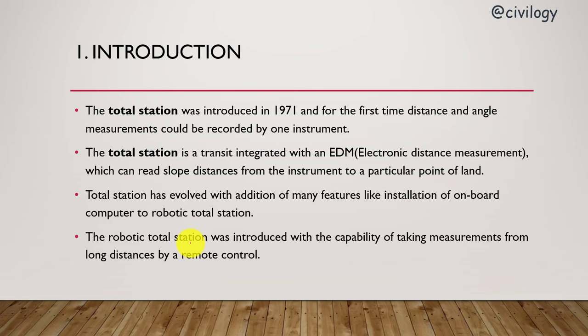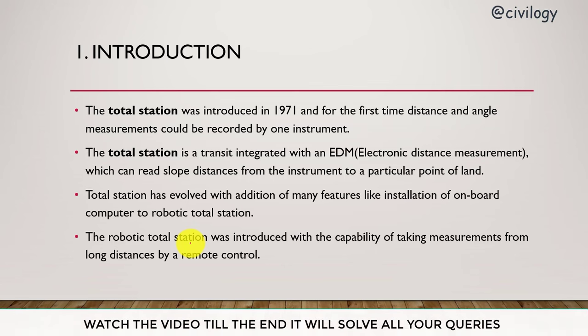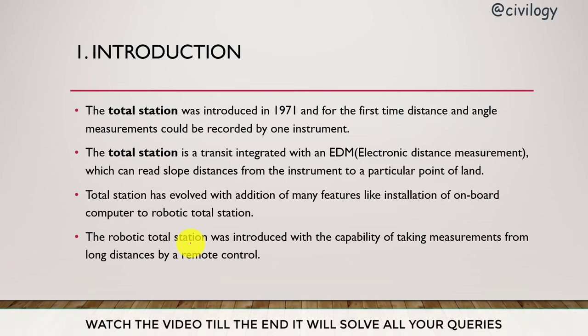Introduction: Before 1971 there were two instruments for calculating distance and angle. For the first time in 1971, an instrument was released called the total station which can read both distance and angles.